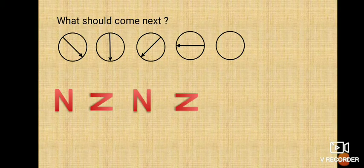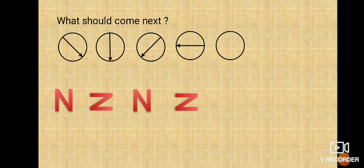So let's see further. Here is a question: what should come next? In this question there are two examples. In the first one, there is a circle and an arrow inside the circle. In the first circle there is an arrow, in the second circle the arrow moves further, then in the third one the arrow moves a little further, then in the fourth one it moved further. Now in the fifth one we have to find out where the arrow will be pointed.